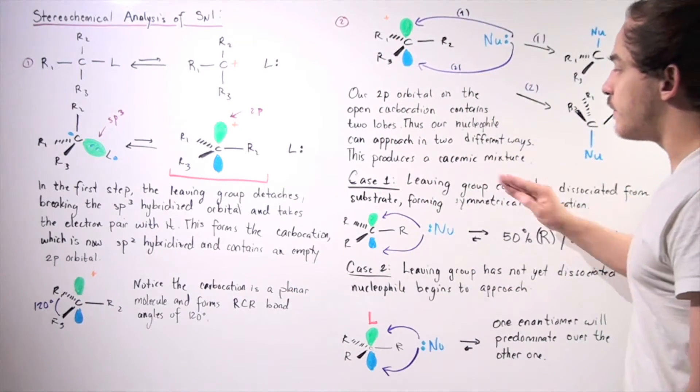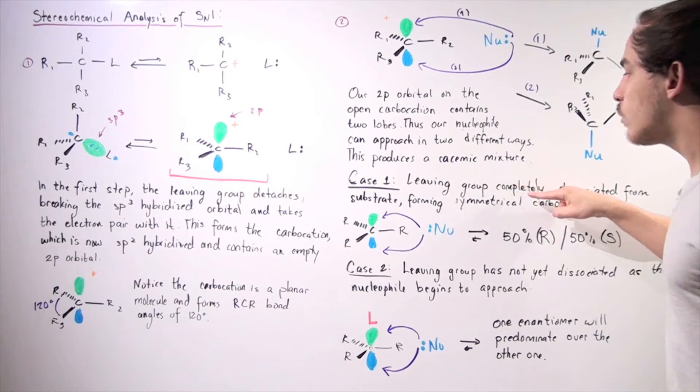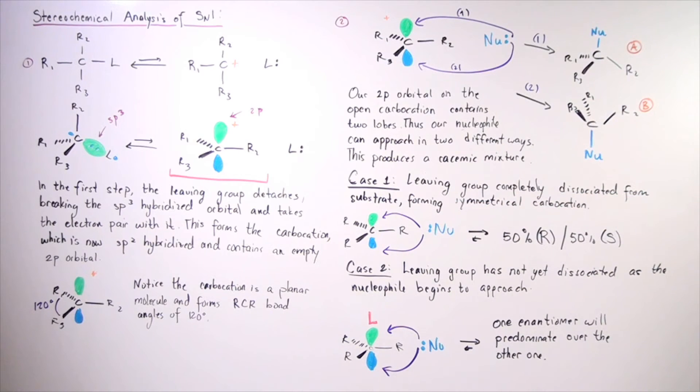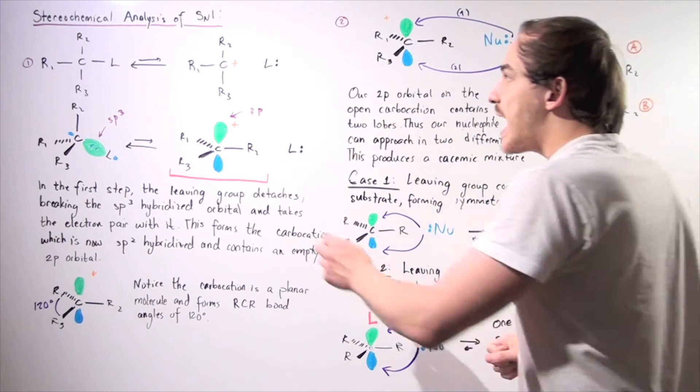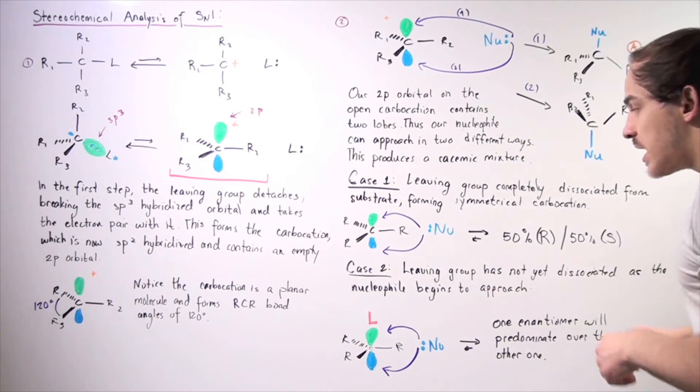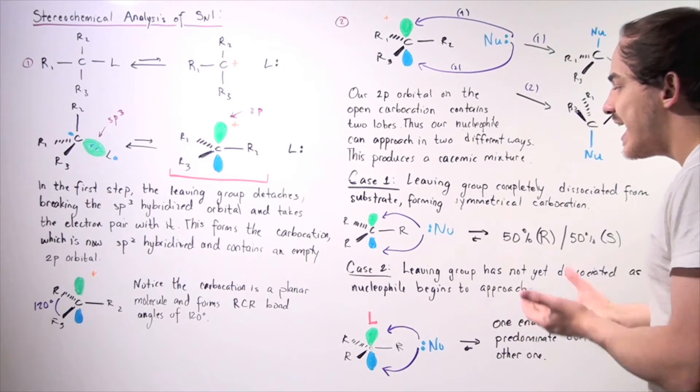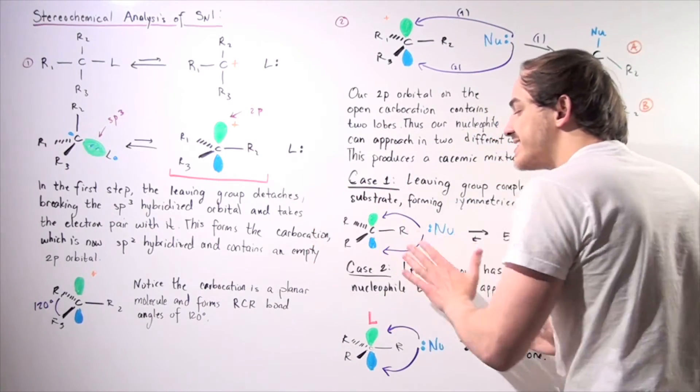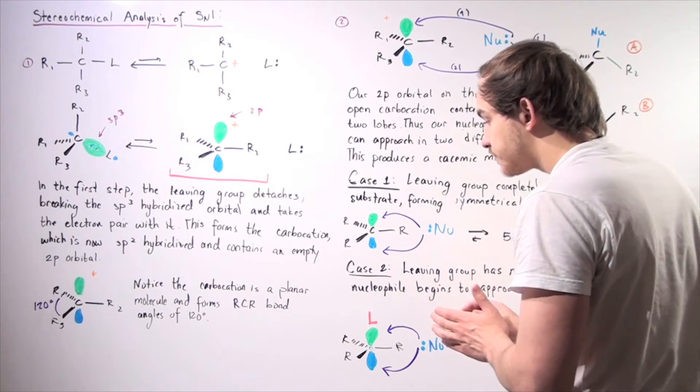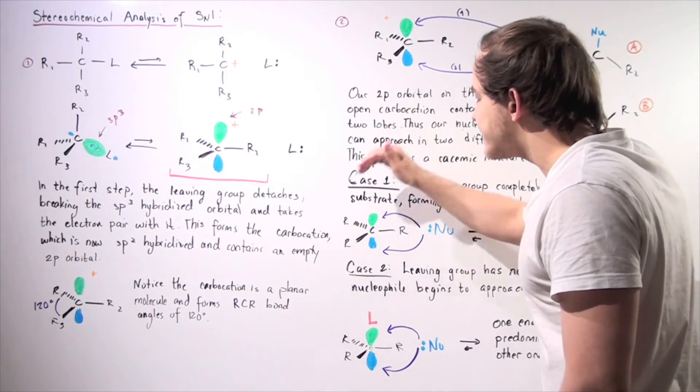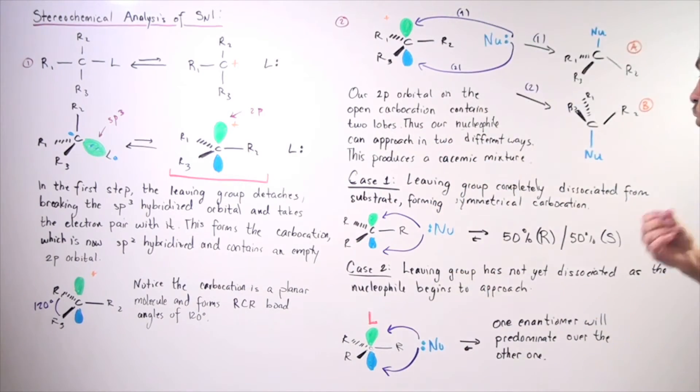So let's examine by looking at the following two cases. Let's suppose, in case one, our leaving group completely dissociated from the substrate, forming our symmetrical carbocation. Let's suppose all these R groups are identical, and our leaving group completely detached. It left, and it's nowhere close to our carbocation intermediate. Now, our nucleophile has a choice. It can either use the pair of electrons and attack from the top or from the bottom. Now, since this substrate is completely symmetrical, that means this pair of electrons will have no choice. It will be just as likely to go from the top as it will from the bottom.